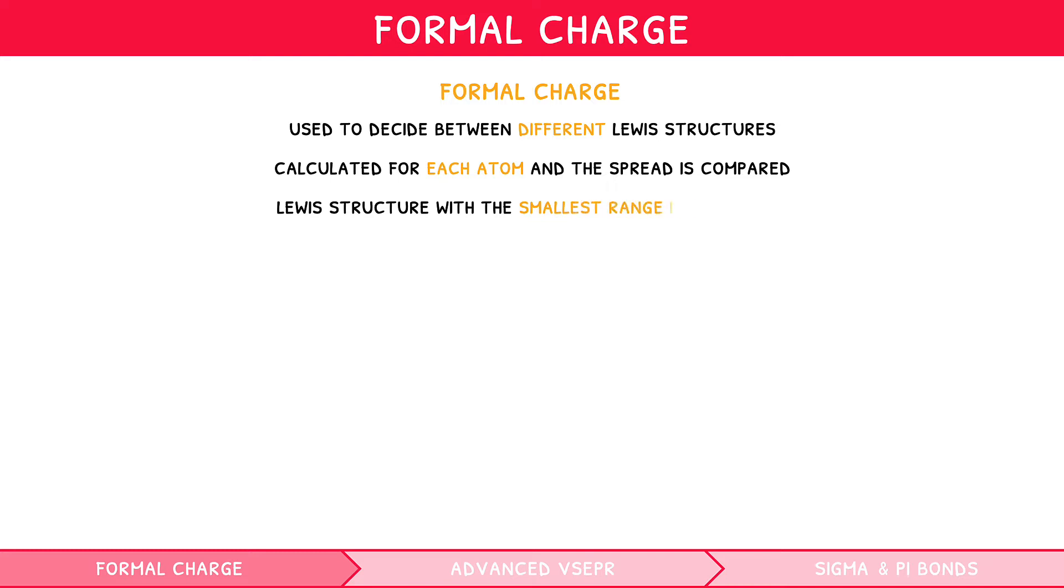However, the concept of Formal Charge is incredibly useful to confirm if you have chosen the correct Lewis structure. Formal Charge is used to decide between different Lewis structures. It is calculated for each atom in the structure, and the spread of Formal Charge is compared, with the Lewis structure with the smallest range being preferred.